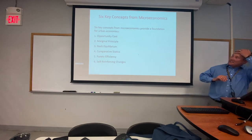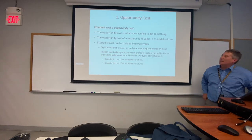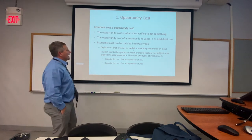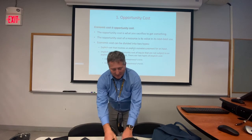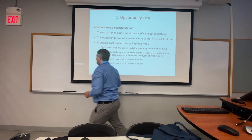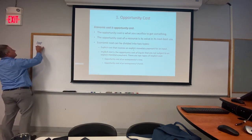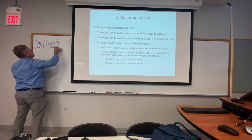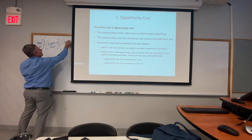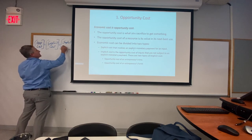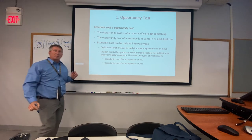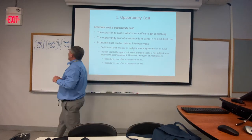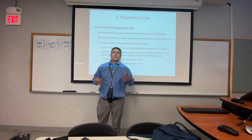Alright, when we talk about economic costs, we're always including implicit as well as explicit costs. That's how I like to divide it up in micro class. Opportunity cost equals explicit cost plus implicit cost. For a university, an explicit cost would be salaries to the teachers — that's an easy number, it has a receipt.